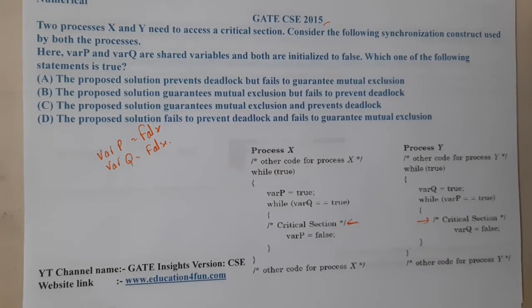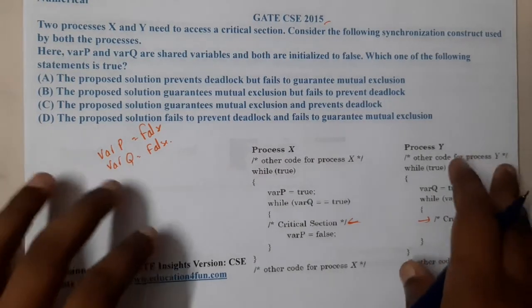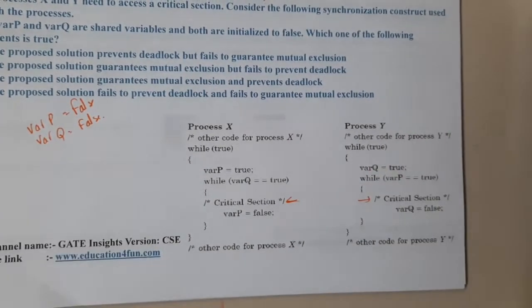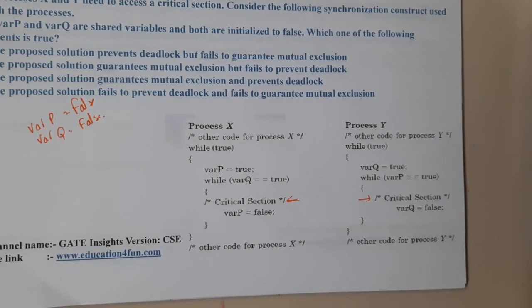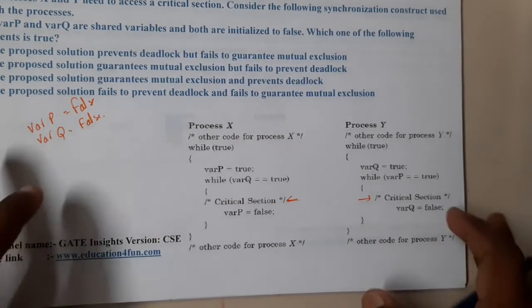Now they are asking which one of the following is always true. Let us start analyzing the question. The processes X and Y - most probably they were asking about mutual exclusion, progress, deadlock and all those things. Let us try to analyze them and decide first, then check the options.